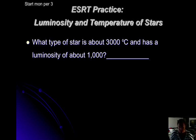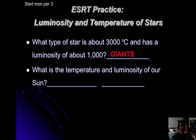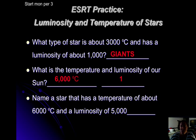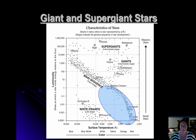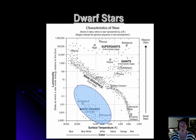Let's look at the chart and answer some questions. What type of star is 3,000 degrees with a luminosity of about 1,000? Those would be giants. What is the temperature and luminosity of our sun? 6,000 degrees Celsius and a luminosity of 1. Name a star with a temperature of 6,000 degrees and a luminosity of 5,000 — that would be Polaris. Giants and supergiants are in the top right corner, and dwarf stars are down on the bottom left.